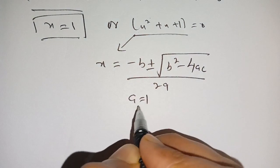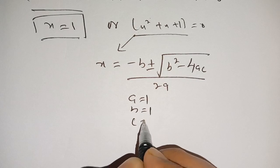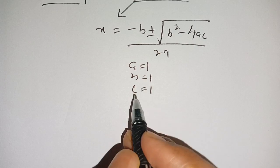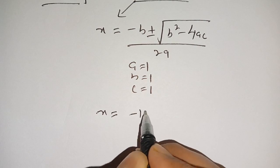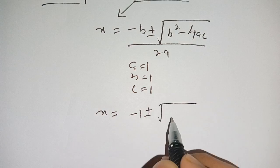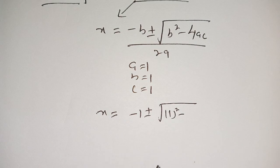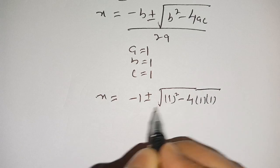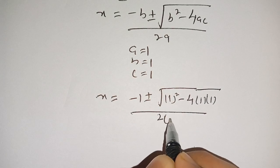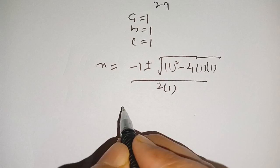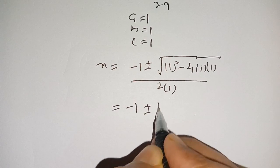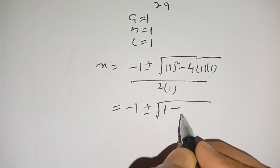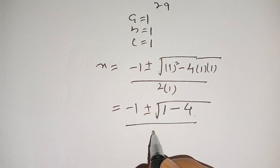Here a is equal to one, b is equal to one, and c is equal to one. Substituting these values, we get x equals minus one plus or minus square root of one squared minus four times one times one, divided by two times one, which gives minus one plus or minus square root of one minus four, divided by two.